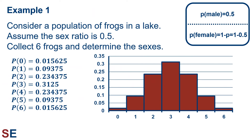Looking at the binomial probability distribution for this scenario, we can see that it is symmetric, with the highest probability at 3 males — that is, 3 successes. The sum of all these probabilities will equal 1 because there are no other possible results if we do 6 trials. And if we wanted to know more complicated results, such as the probability of 0 or 1, we could add these probabilities together.